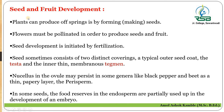The seed develops from the ovules present in the ovary, and the fruit develops from the ovary wall when it matures. The seed is the most significant feature as it further gives rise to the plant or the offspring when it matures.